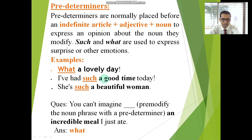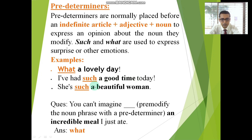'I have had such a good time today.' Here, 'time' is the noun, 'good' is the adjective, 'a' is the article — and 'such,' placed just before this phrase, is functional as a pre-determiner. Similarly, in 'She has such a beautiful woman,' 'such' is a pre-determiner here.